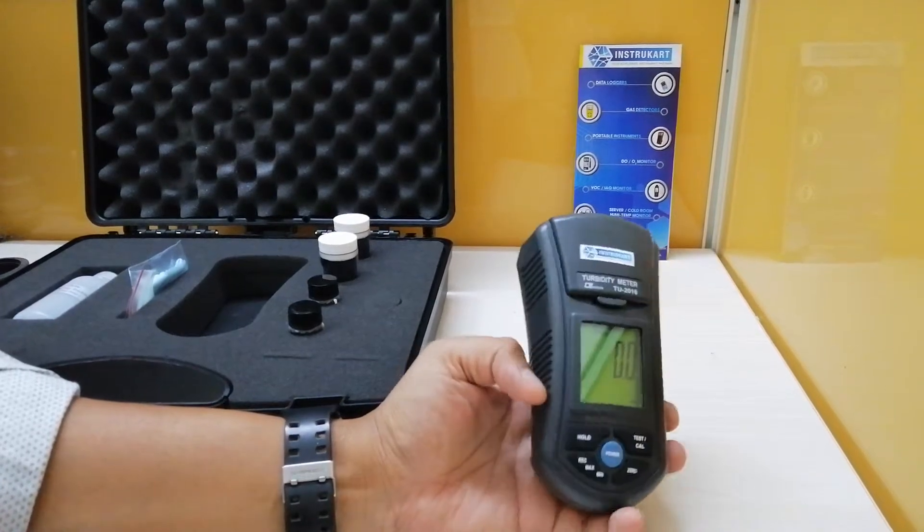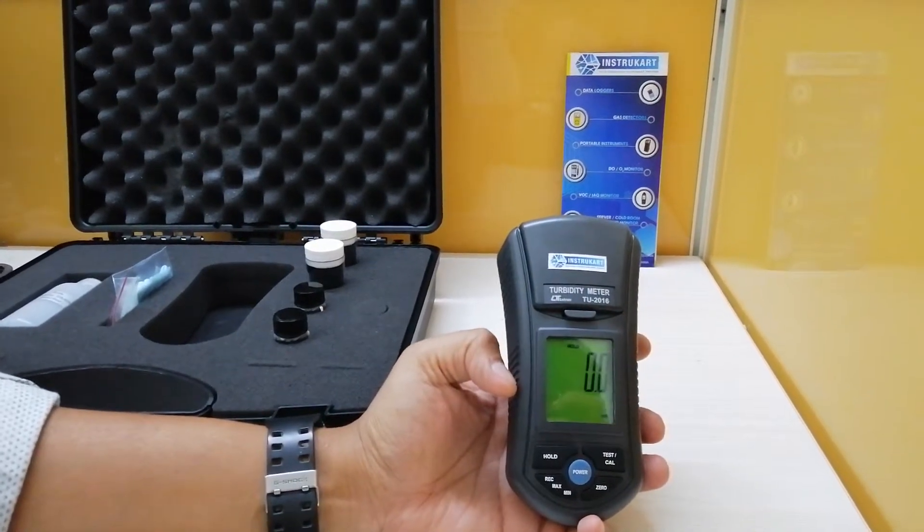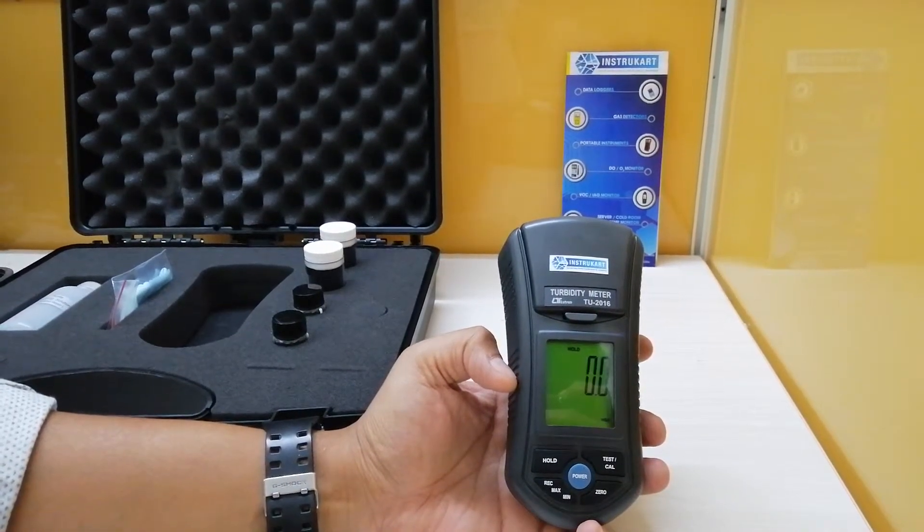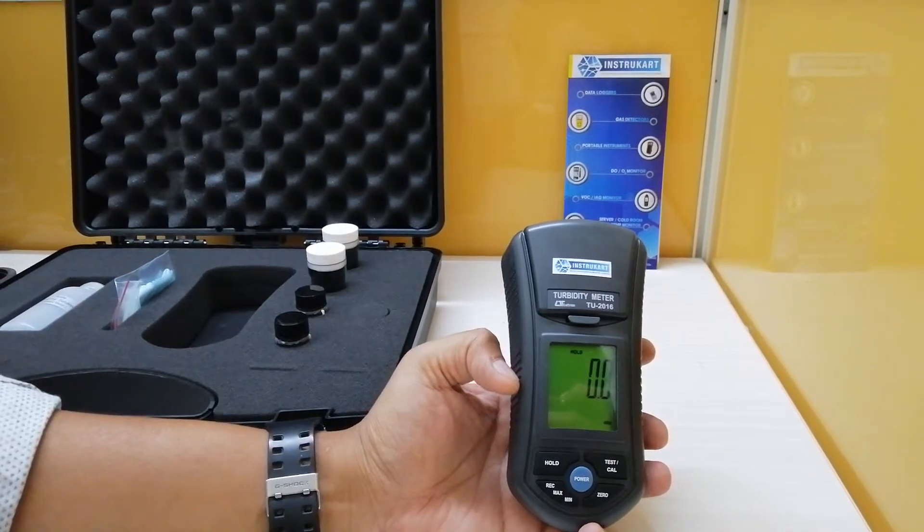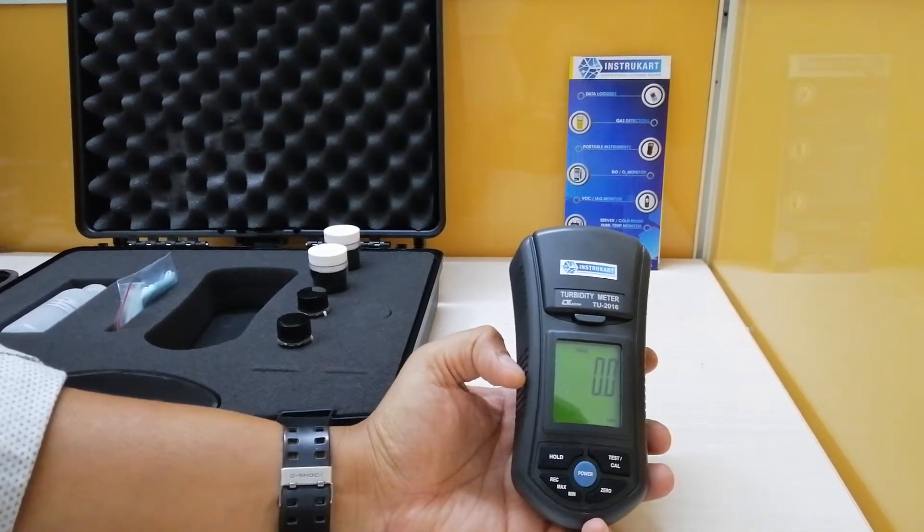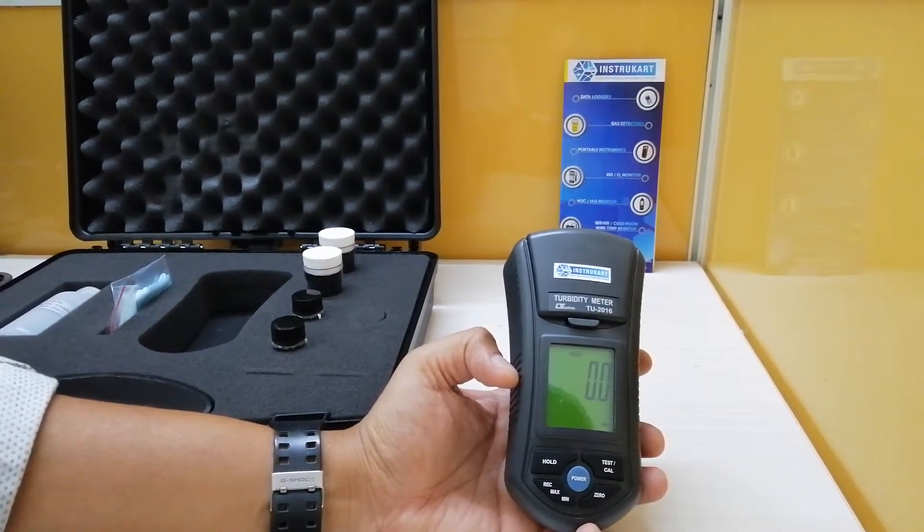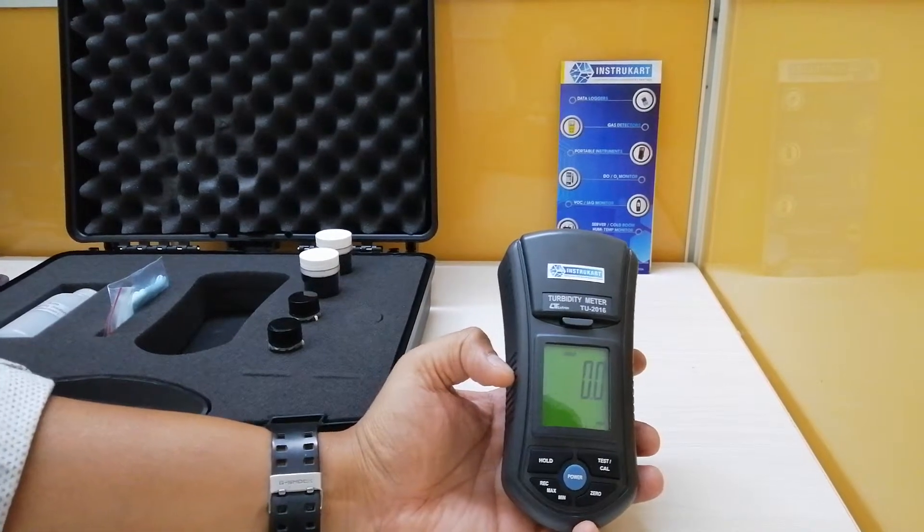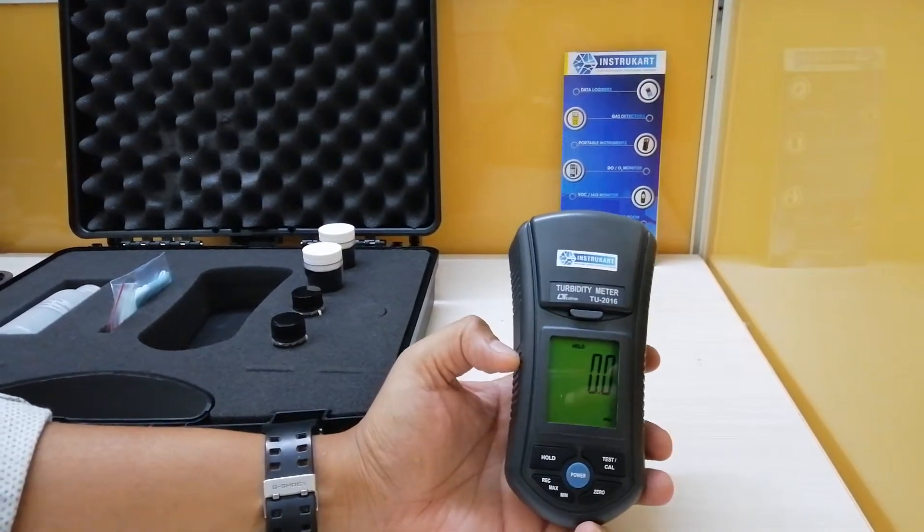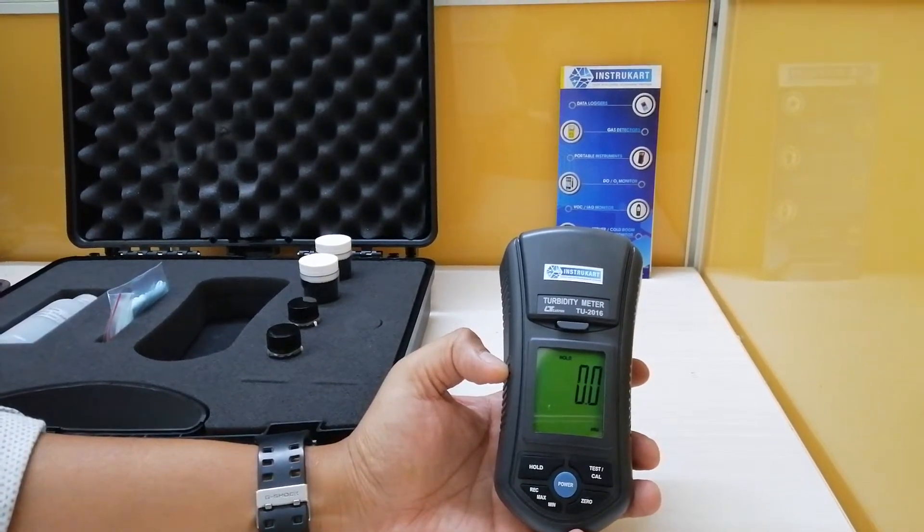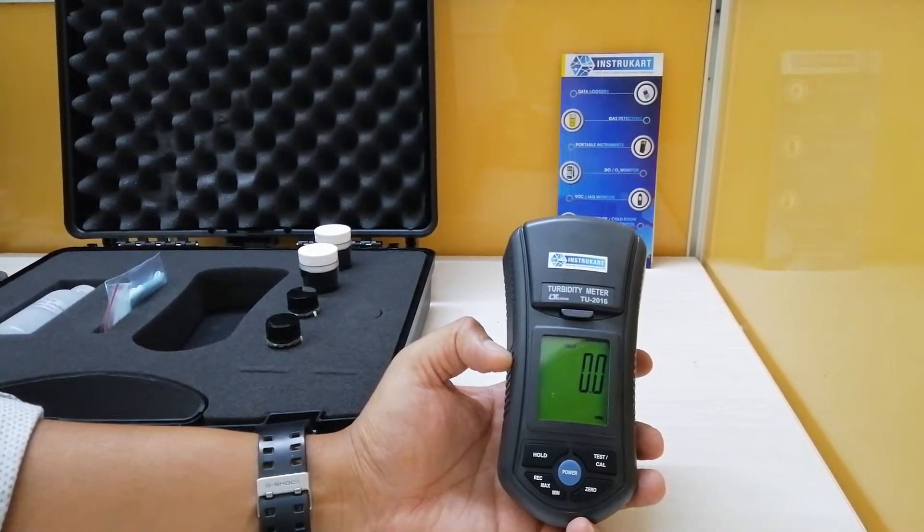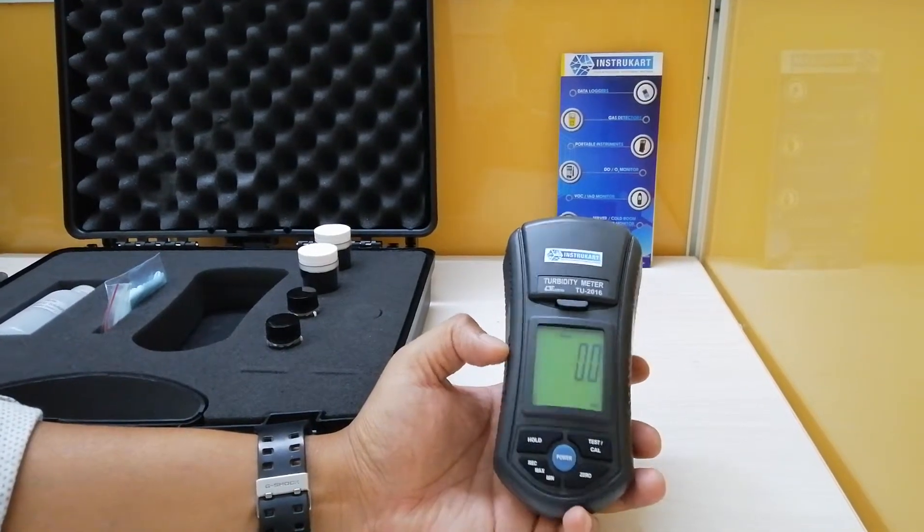This particular meter has got a custom one chip microprocessor LSI circuit and it has got a range of 0.00 to 50.00 NTU which is also 50 to 1000 NTU. NTU stands for nephelometric turbidity unit. For other specifications, it has got an accuracy of 0.00 to 49.99 NTU with a resolution of 0.01 and plus or minus 5 percentage reading.